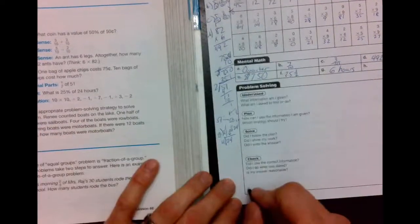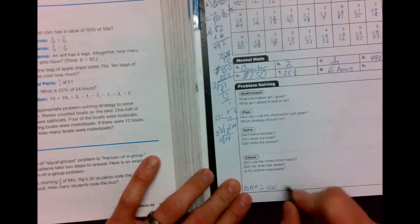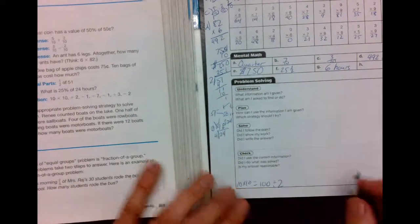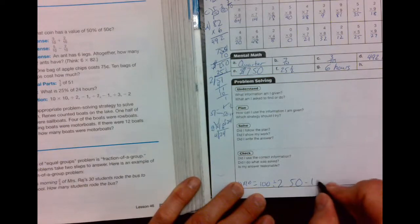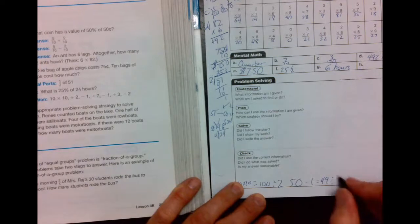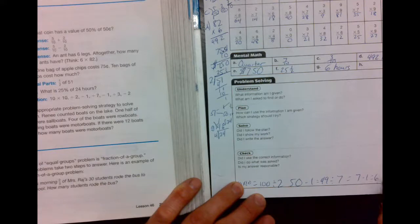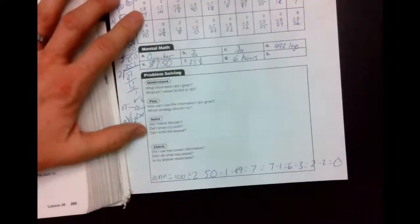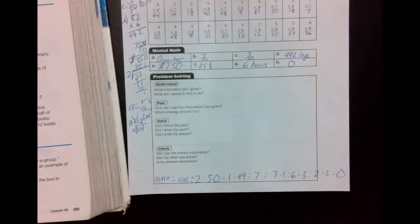Alright. Let's go across the bottom. 10 times 10 equals 100. 100 divided by 2 equals 50. 50 minus 1 equals 49. 49 is always divided by 7 equals 7. Minus 1 equals 6. Divided by 3 equals 2. Minus 2 equals L. Zichel, nada, zippel, none.